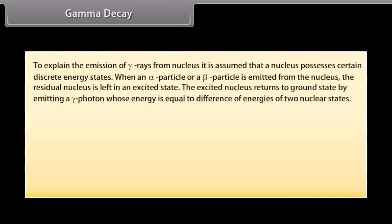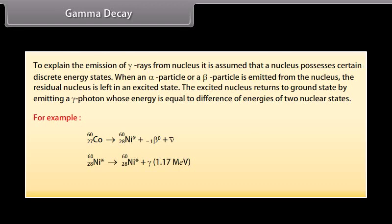Gamma decay. To explain the emission of gamma rays from nucleus, it is assumed that a nucleus possesses certain discrete energy states. When an alpha particle or a beta particle is emitted from the nucleus, the residual nucleus is left in an excited state. The excited nucleus returns to ground state by emitting a gamma photon whose energy is equal to difference of energies of two nucleus states. For example, Cobalt nucleus with mass number 60 and atomic number 27 transforms into Nickel nucleus with mass number 60 and atomic number 28 in its excited state. The excited Nickel nucleus with mass number 60 and atomic number 28 returns into ground state by emission of two successive gamma photons of energies 1.17 MeV and 1.33 MeV.